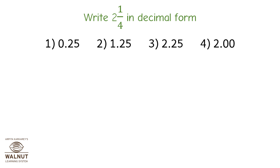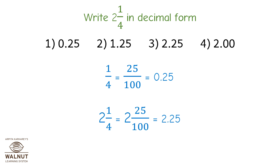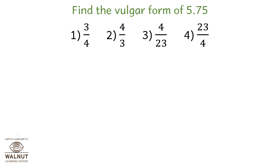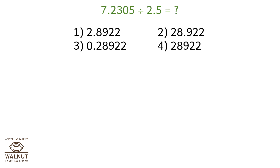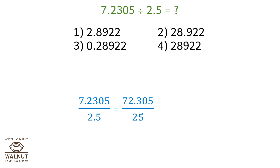Write 2 and 1/4 in decimal form. 1 upon 4 is equal to 25 upon 100, which is equal to 0.25. So 2 and 1/4 is equal to 2 whole 25 upon 100, which is equal to 2.25. Find the vulgar form of 5.75. 5.75 is equal to 575 upon 100, which equals 23 upon 4. Also, 7.2305 divided by 2.5 equals 72.305 upon 25, which equals 2.8922.